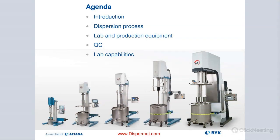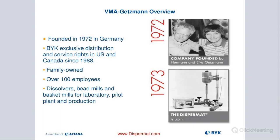We're going to have a quick introduction about VMA. Then we dive right into the actual dispersion process. We're going to talk about the different lab and production equipment solutions that we offer, and then a little bit about the QC process, and then some of the lab capabilities that we offer here in the U.S. in Wallingford, or in Germany at VMA headquarters. We have an outstanding applications lab where we can do a lot of trials and also upscale trials for production equipment.